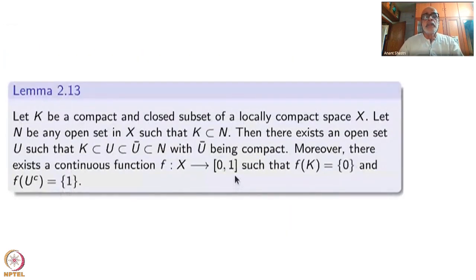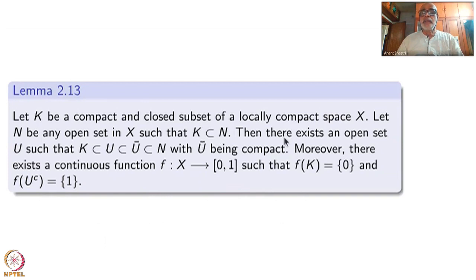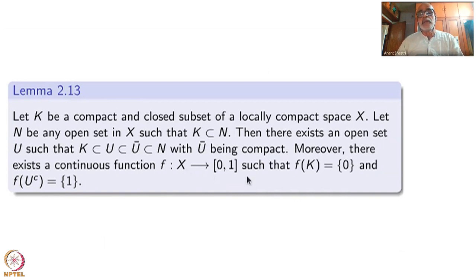The first lemma: take a compact and closed subset K of a locally compact space, and let N be an open subset of X which contains K. Then there exists an open set U such that K ⊆ U ⊆ Ū ⊆ N, and Ū is compact. Moreover, there is a continuous function f from X to [0,1] such that f(K) = {0} and f(X\U) = {1}.